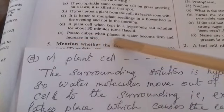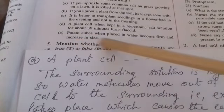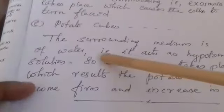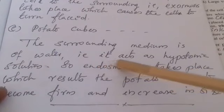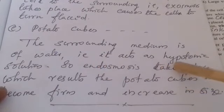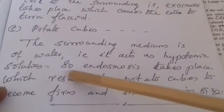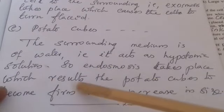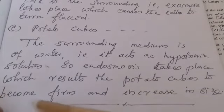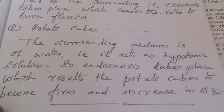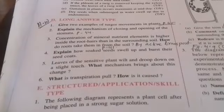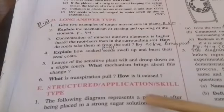Fifth: potato cubes when placed in water become firm and increase in size. Answer: because the surrounding medium is water, it acts as a hypotonic solution, so endosmosis takes place, which results in the potato cubes becoming firm and increasing in size.